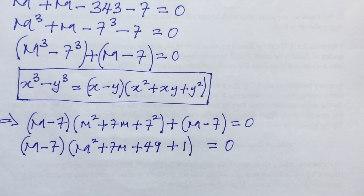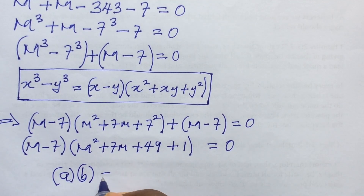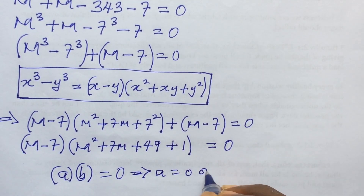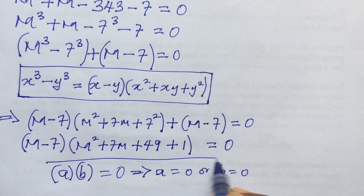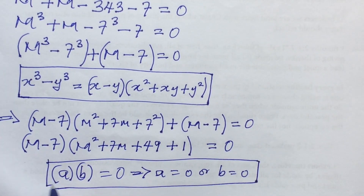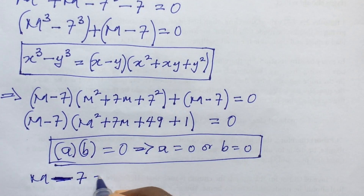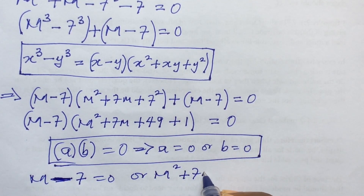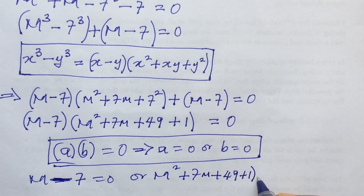Now we apply the zero product rule: if a times b equals zero, then a = 0 or b = 0. So we set each factor equal to zero: m - 7 = 0, or m² + 7m + 49 + 1 = 0, giving us m² + 7m + 50 = 0.